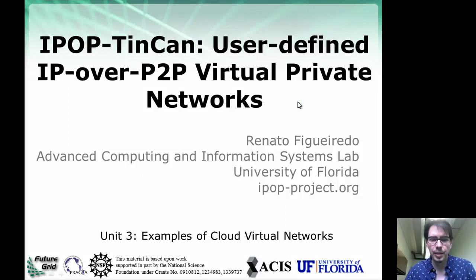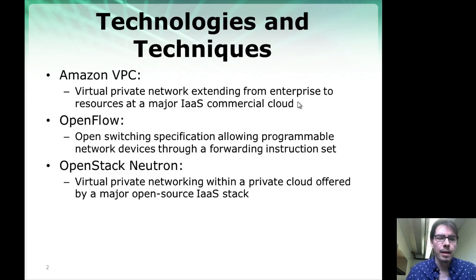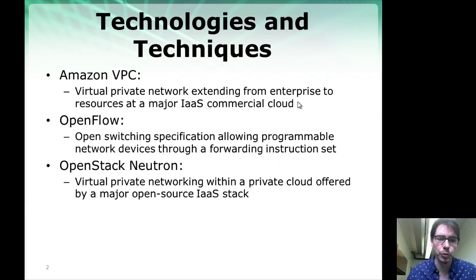Hello and welcome to our third lecture where I'm going to discuss a few examples of cloud virtual networks to provide additional context about iPod. I'm going to highlight three representative but different examples of virtual networks: one is the Amazon Virtual Private Cloud, another is a general technology called OpenFlow, and the last one is an infrastructure as a service open source implementation called Neutron, which is part of the OpenStack IaaS cloud software.